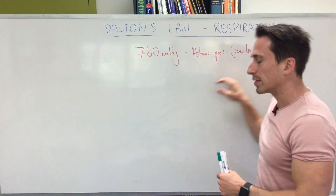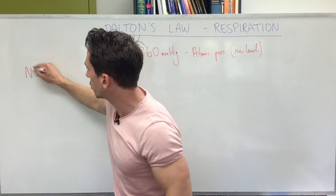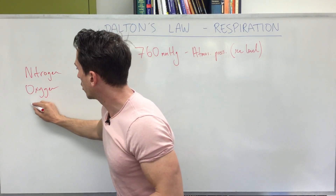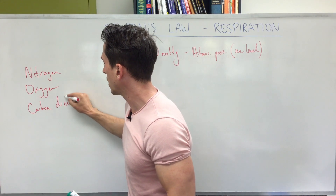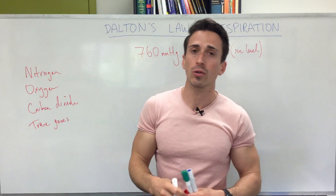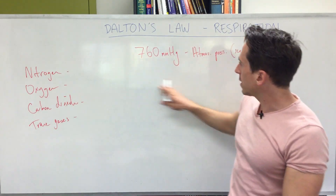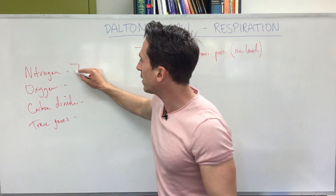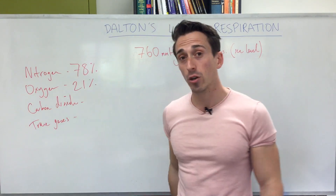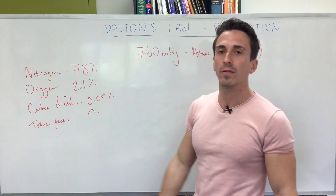Now the atmosphere, even though it is 760 millimeters of mercury, is made up of a number of individual gases. These include nitrogen, oxygen, carbon dioxide, and some trace gases such as argon and water vapor. Around 78% of it is nitrogen, around 21% is oxygen, approximately 0.05% is carbon dioxide, and the rest is made up of trace gases.